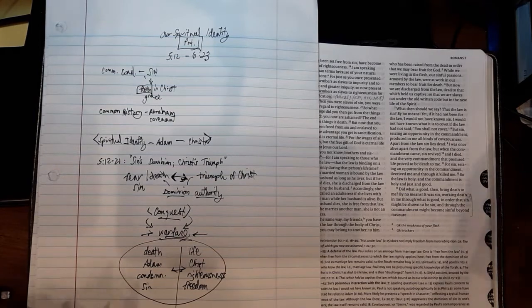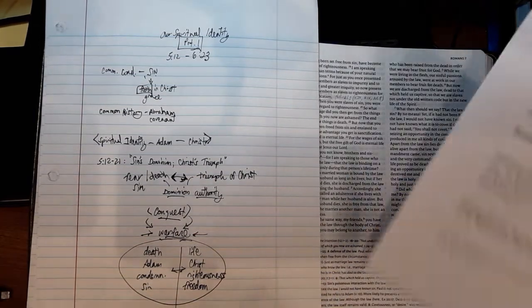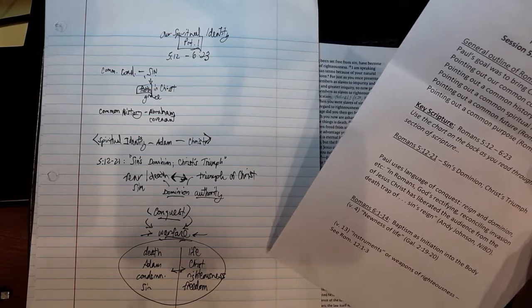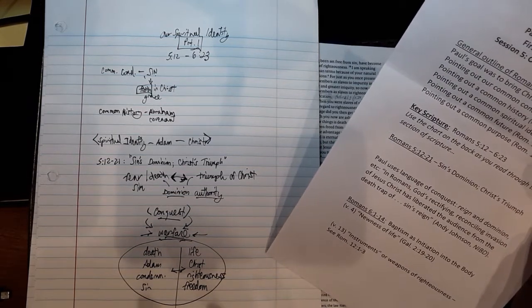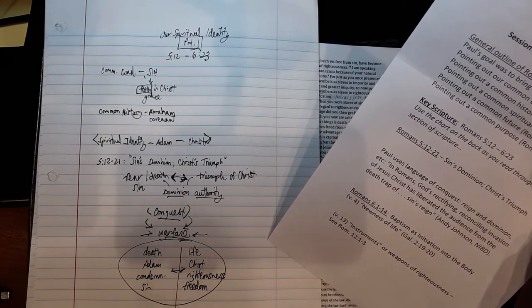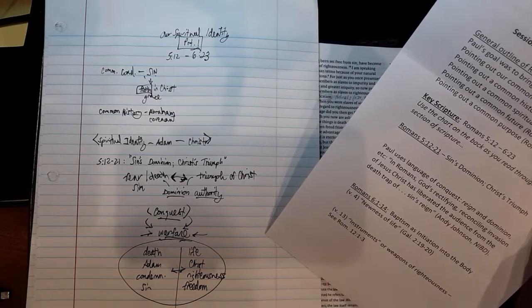This is from Andy Johnson in the New International Bible Dictionary. Paul uses language of conquest, reign, dominion. In Romans, God's rectifying, reconciling invasion of Jesus Christ has liberated the audience from the death trap of sin's reign.